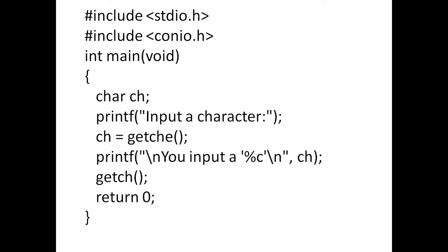Here, these two header files have to be included in every program. ch is a character variable. printf 'input a character' will display that prompt. When you press any character from the keyboard, getche will read one character and store it into the ch variable — whatever you type from the keyboard will be stored into ch.